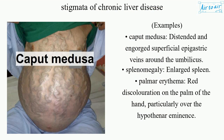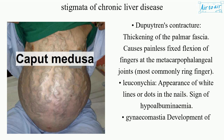Splenomegaly is an enlarged spleen. Palmar erythema is red discoloration on the palm of the hand, particularly over the hypothenar eminence. Dupuytren's contracture involves thickening of the palmar fascia, causing painless fixed flexion of fingers at the metacarpophalangeal joints, most commonly the ring finger. Leuconychia is the appearance of white lines or dots in the nails, a sign of hypoalbuminemia.